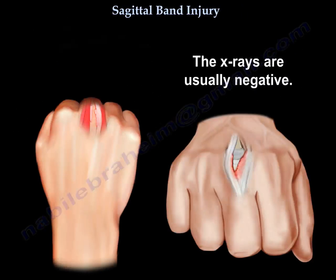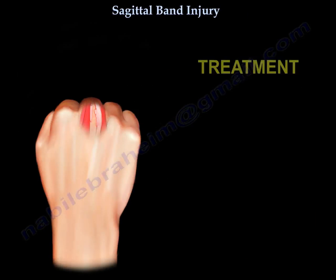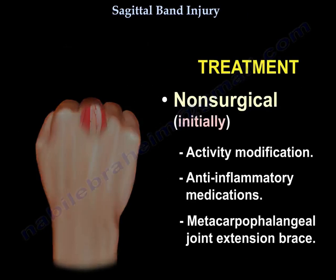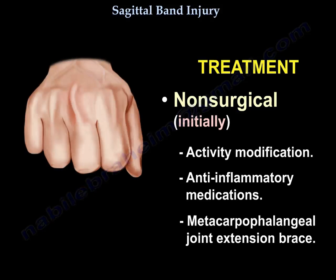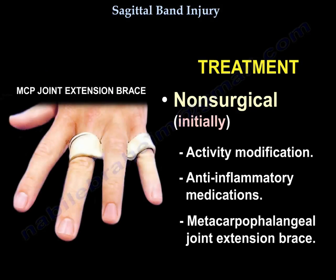X-rays are usually negative. Initially, the treatment is usually non-surgical. You are going to have activity modification for the patient, anti-inflammatory medication, and a metacarpophalangeal joint extension brace.